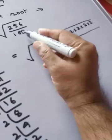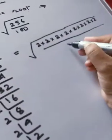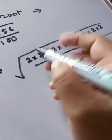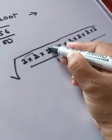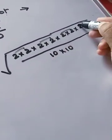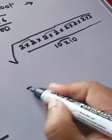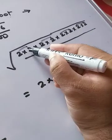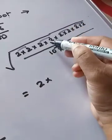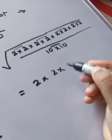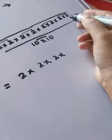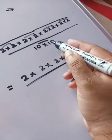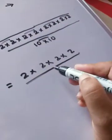For 100, we can write 10 × 10. Now we pair up all the factors, including the denominator. For each pair, one number comes out. So for each pair of 2s — pair one, pair two, pair three, pair four — one 2 comes out per pair.